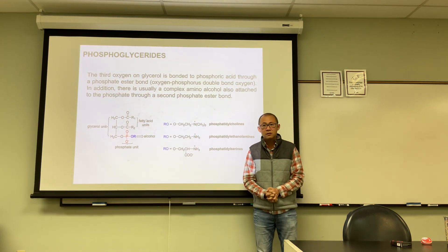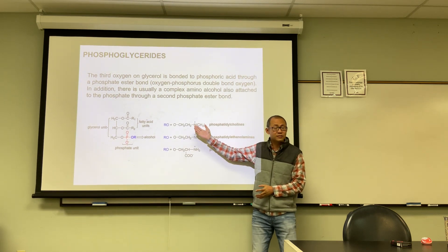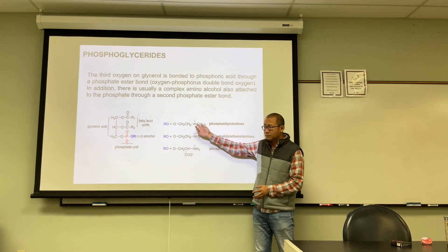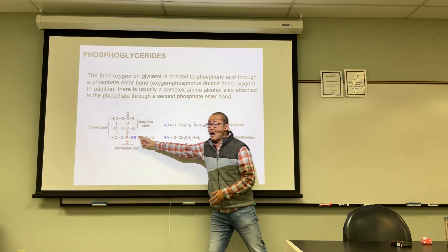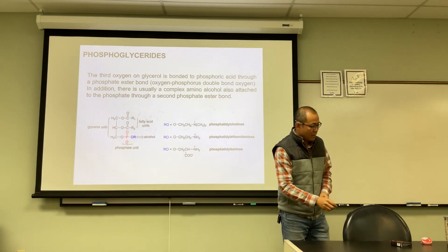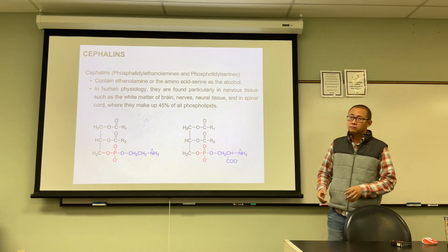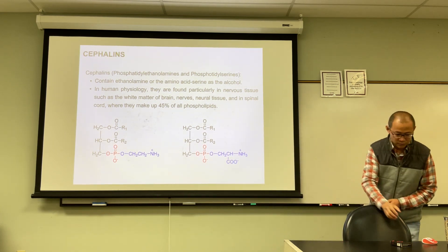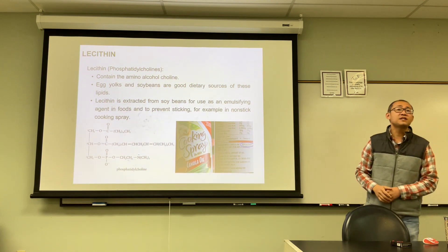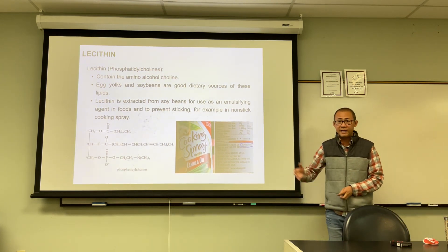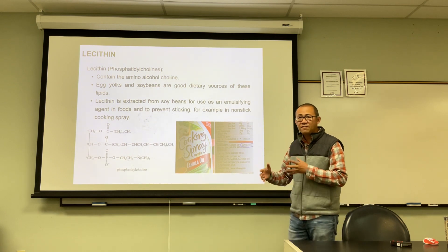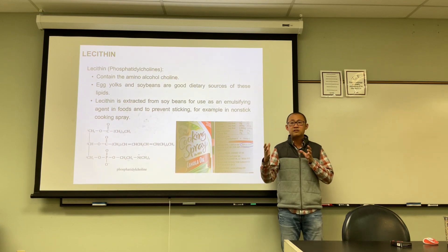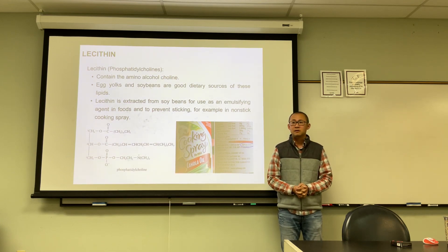One type of small alcohol is choline. Choline has a quaternary ammonium ion with four carbons attached to the nitrogen. When the small alcohol is choline, the resulting phosphoglyceride is called lecithin or phosphatidylcholine.